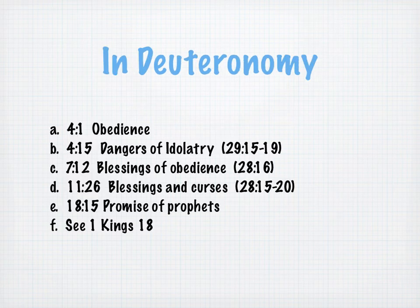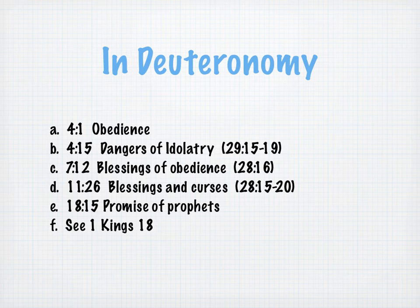We see these themes prefigured already in the book of Deuteronomy. In chapter 4, verse 1, the importance of obedience. Further in that book, the dangers of idolatry. Then the blessings of obedience. With every covenant renewal, there is a reminder of blessings and curses — blessings for those who are obedient, and curses for those who are not, who fall into idolatry.